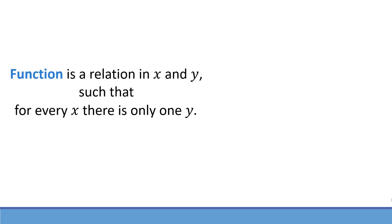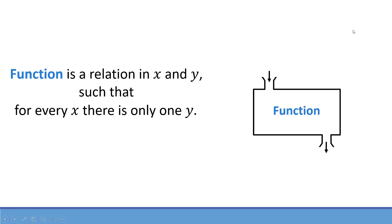Here is the formal definition of a function. A function is a relation in x and y such that for every x there is only one y. To better understand this definition, let's think of a function as a box such that when certain values of x go in the box, the function relates them with corresponding values of y. And again, for every value of x there is only one corresponding y value.